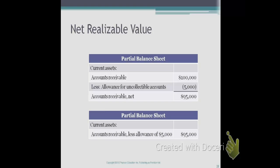Sometimes your questions will ask what is the net realizable value. To calculate it, take your accounts receivable balance and subtract the balance in your allowance for uncollectible accounts. The accounts receivable balance shows the amounts due to you from customers, while the allowance for uncollectible accounts shows the amount you expect not to collect. So the net realizable value is the amount you can realistically expect to collect from all your customers.